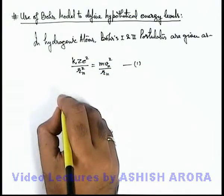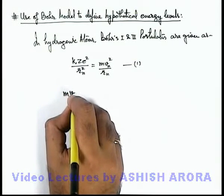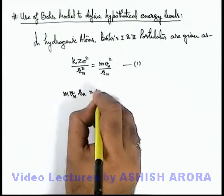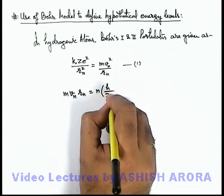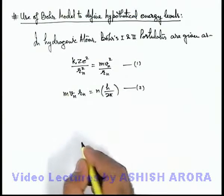And the second postulate is the quantization of angular momentum, which is written as mvₙrₙ equals a multiple of the least quantity of angular momentum, that is h over 2π. That is the second postulate.